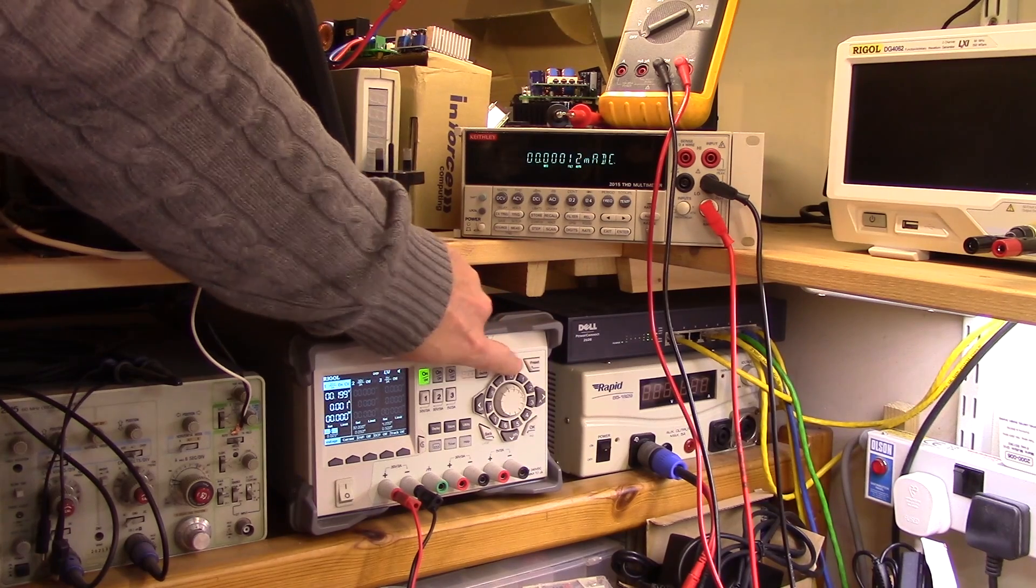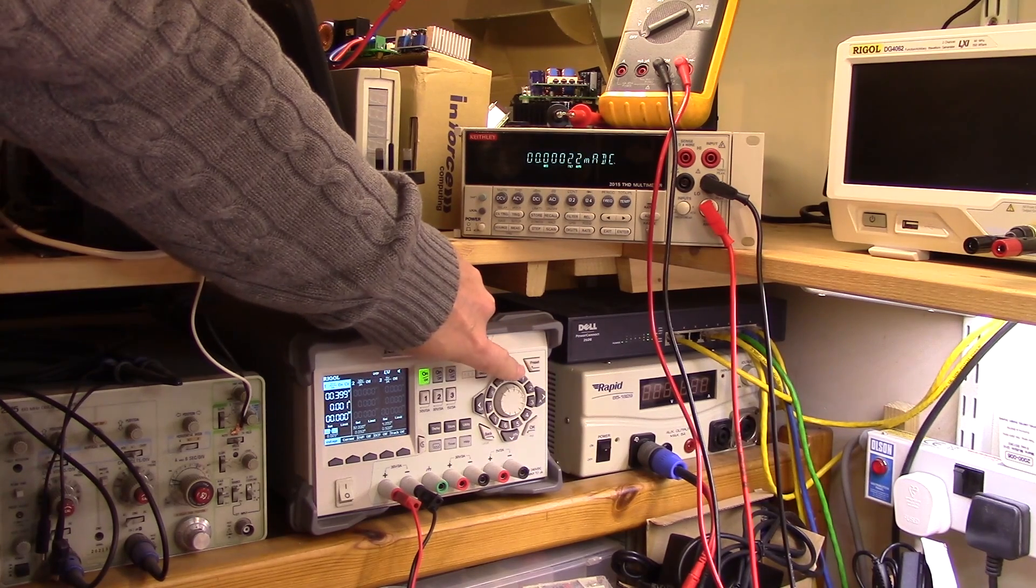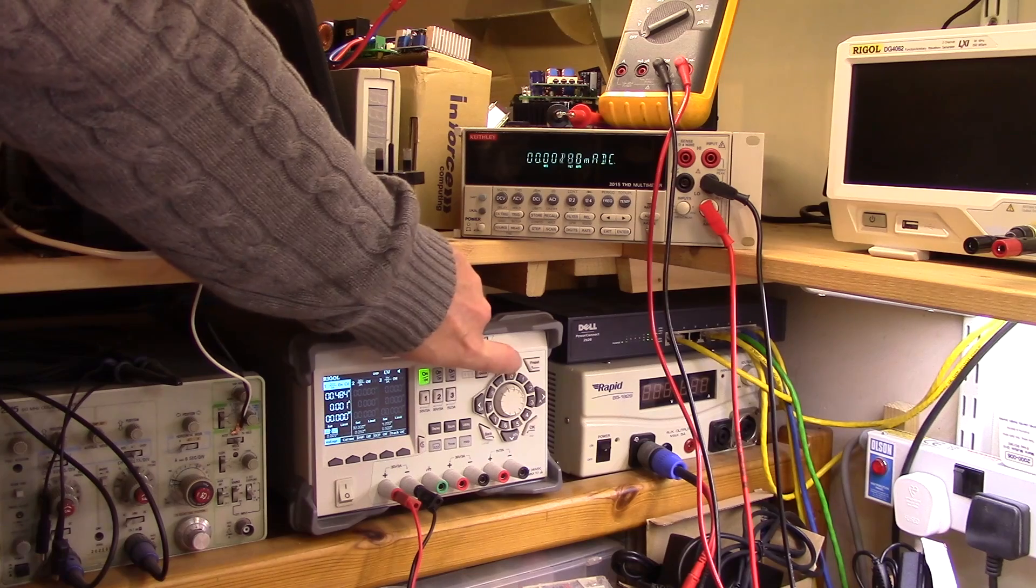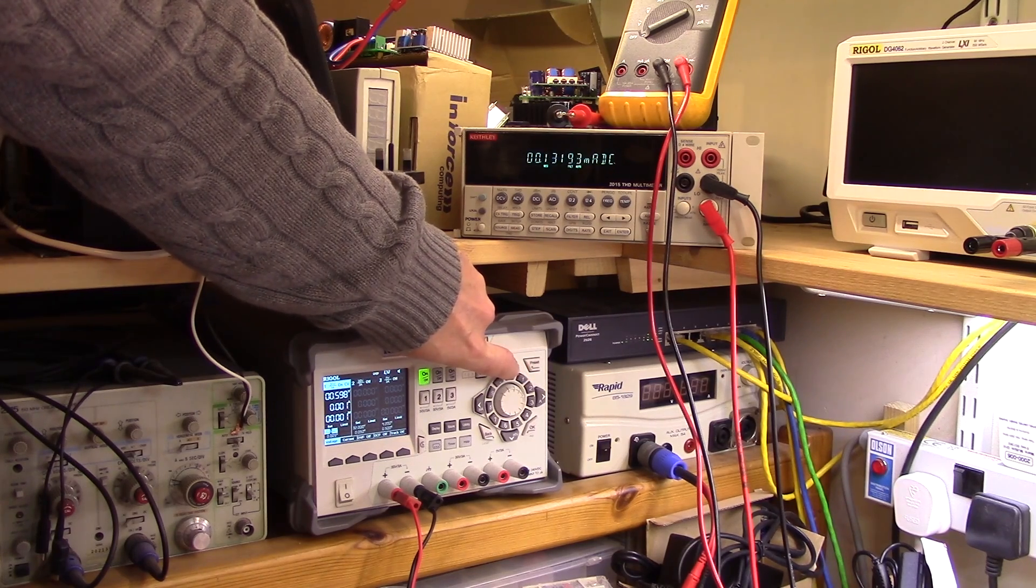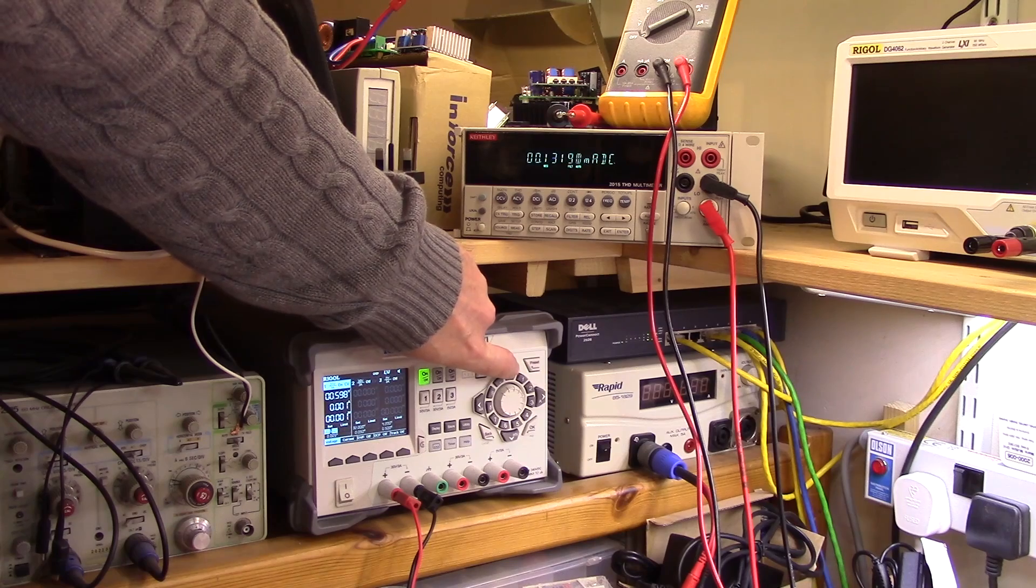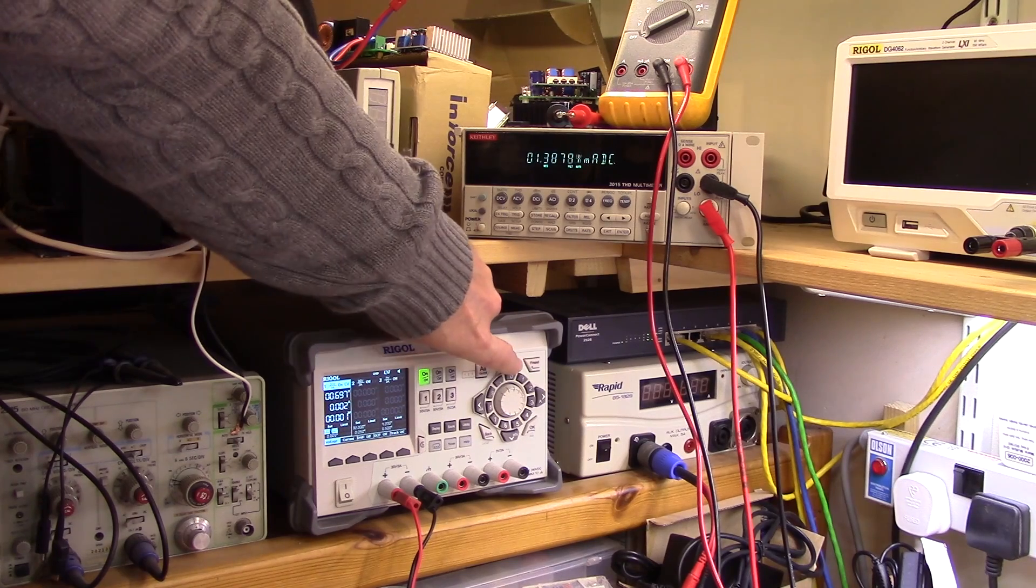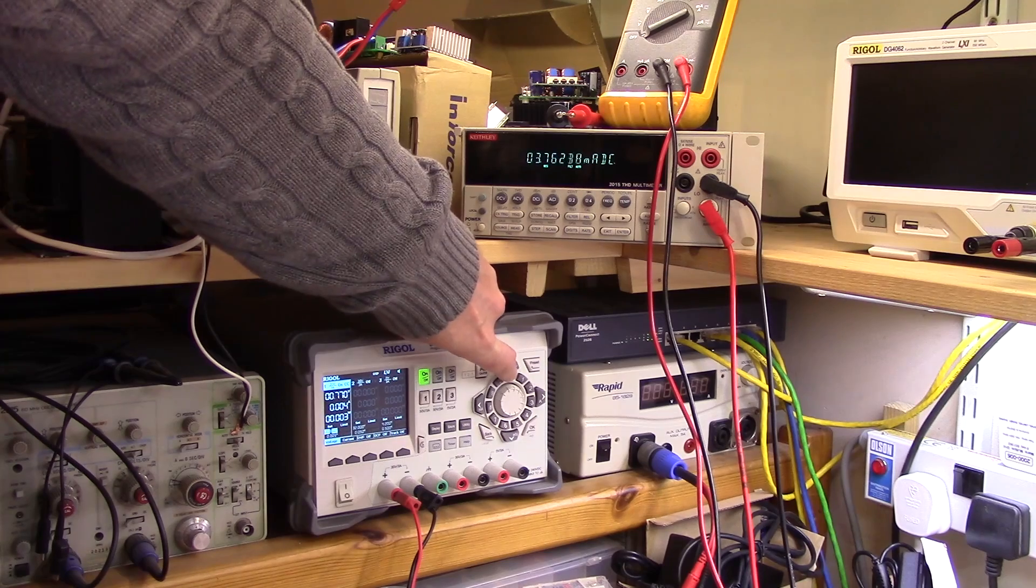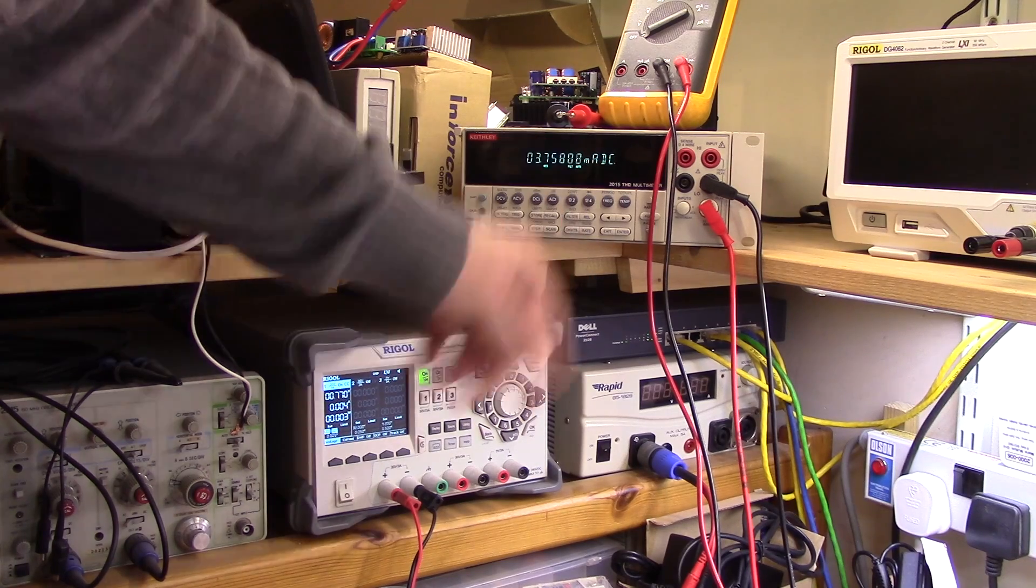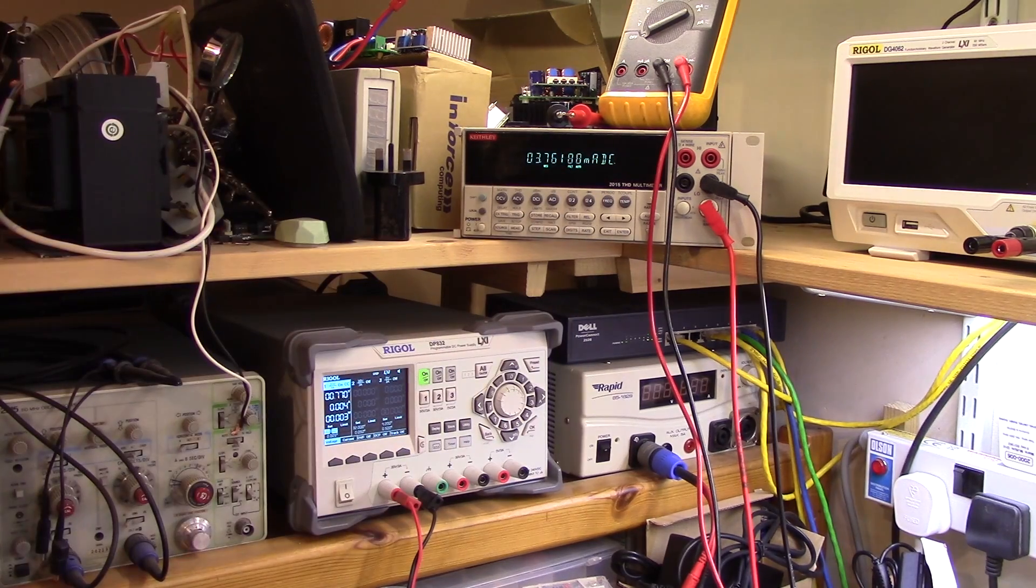I'm just going to step up through the voltage, so 0.2, 0.3, 0.4, we're starting to get a bit of current flowing. 0.5, 0.6, we're up to a tenth of a milliamp there. And at 0.7 volts we're hitting 1.3 milliamps and 0.77 volts we're hitting 3.7 milliamps.